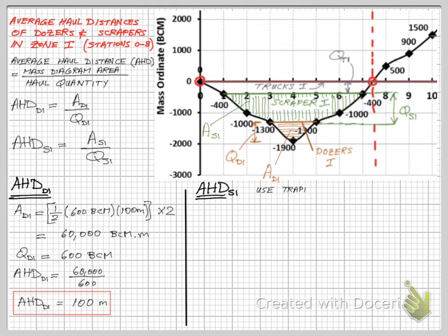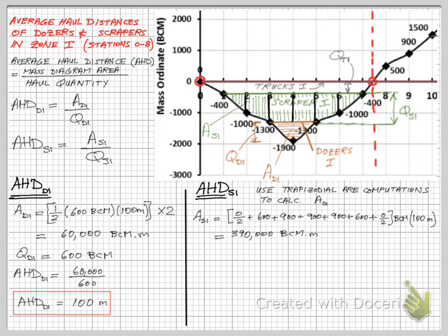For the scrapers we will need to use the trapezoidal area computation to deal with its compound shape. I'm showing here the trapezoidal area calculations following the process we learned in the previous lesson on earthwork quantity calculations.